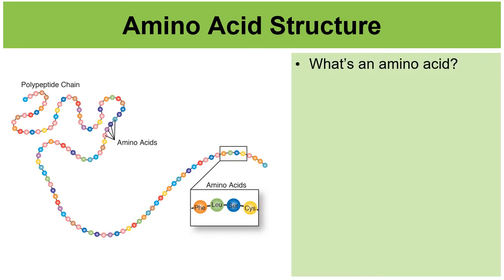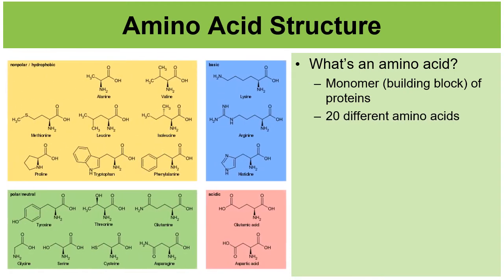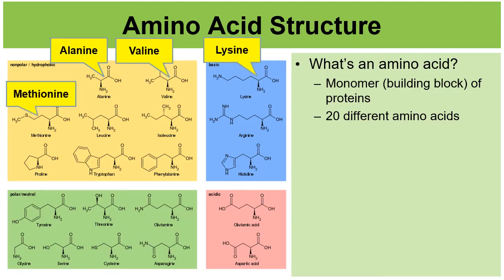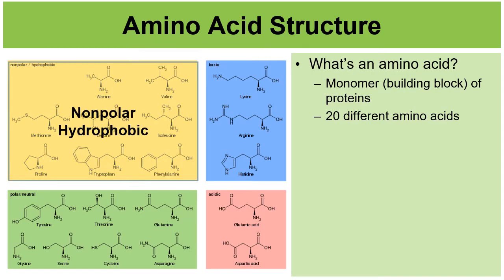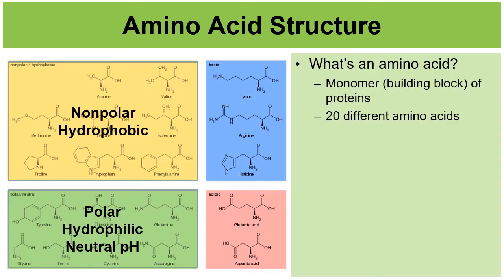So let's go over amino acids in a little more detail. Again, what's an amino acid? It's the monomer, the building block of a protein. There are 20 different amino acids that exist. For instance, alanine and valine and lysine and methionine. Now, they all have little different qualities to them. For example, these are nonpolar and hydrophobic. In green, these are polar hydrophilic and have a neutral pH. In blue, these have a basic pH. In pink, these have an acidic pH. These qualities will be important in a little bit.